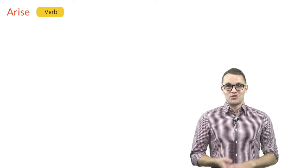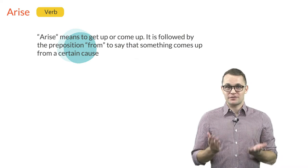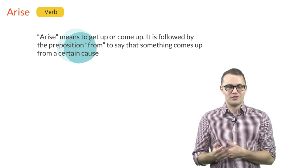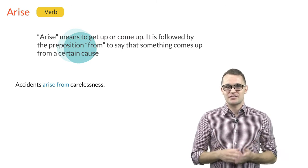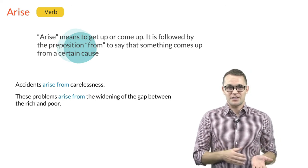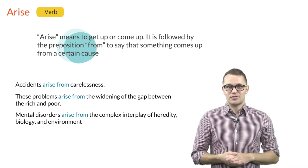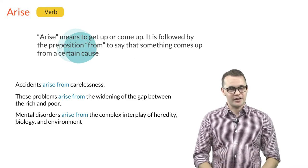Another word you can use to introduce the cause of something is the verb arise, which means to get up or to come up. It is followed by the preposition from to say that something comes up from a certain cause. Take a look at the following examples. Accidents arise from carelessness. These problems arise from the widening of the gap between the rich and the poor. Or mental disorders arise from the complex interplay of heredity, biology and environment.